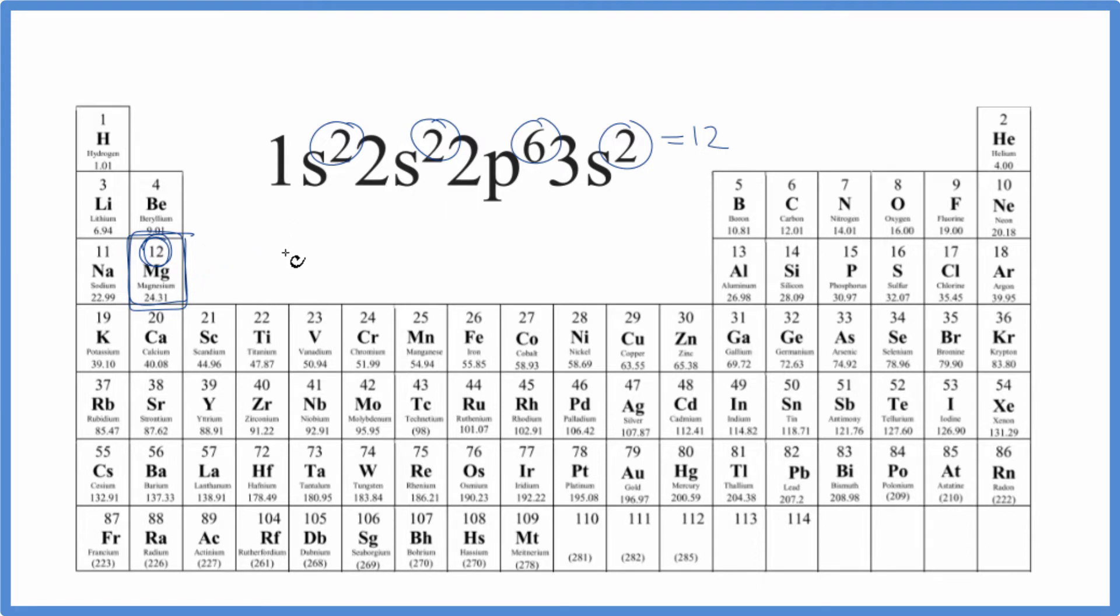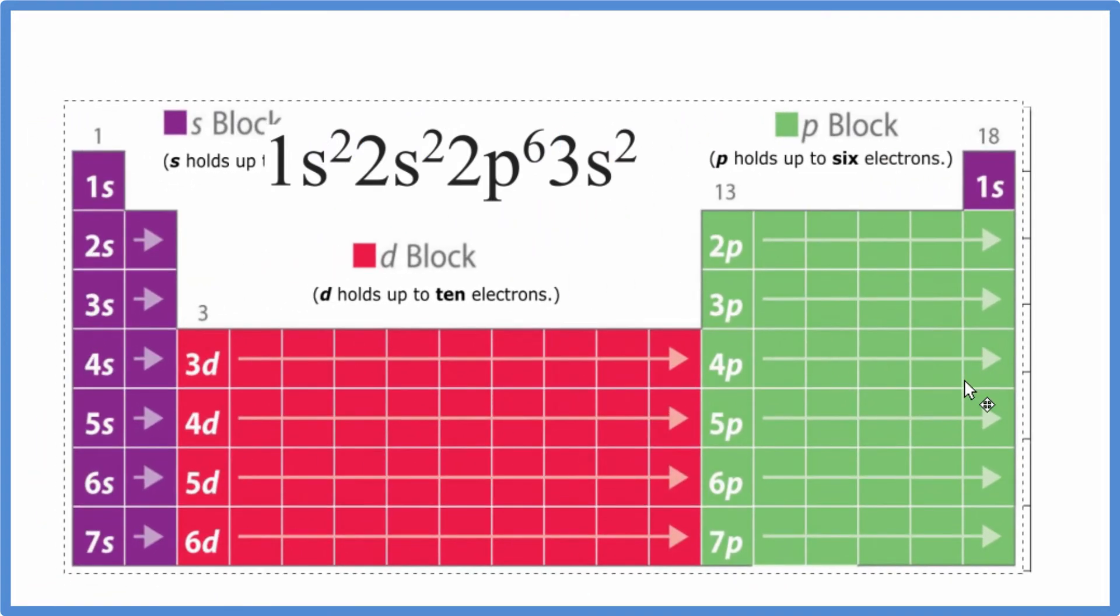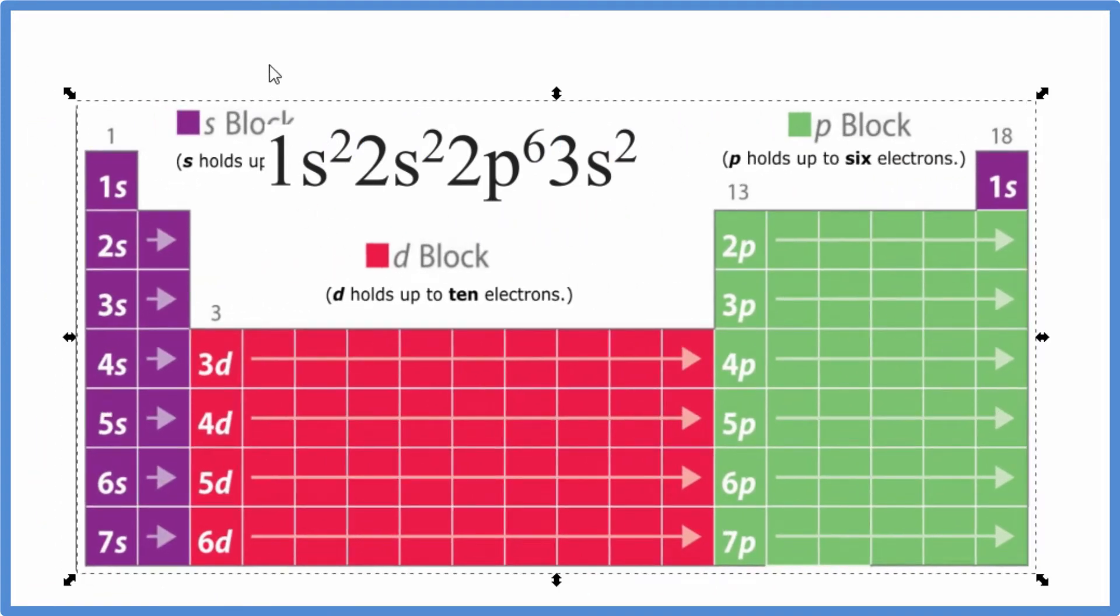There's another way we can do this. We could look at the periodic table based on orbital blocks. So here's the periodic table. We have the s orbital block.